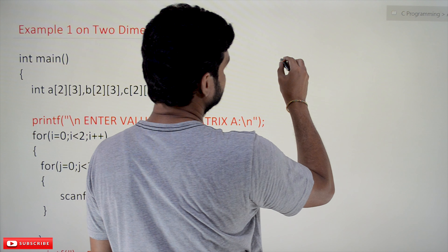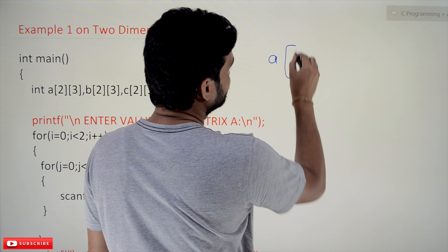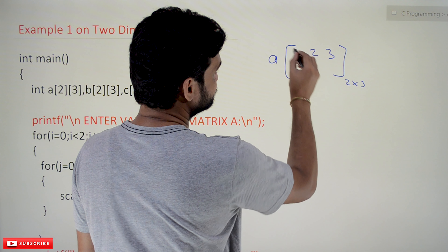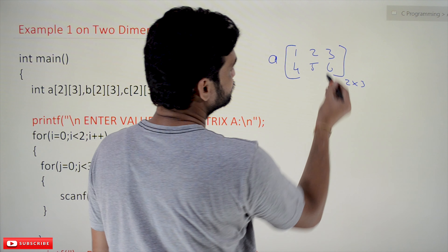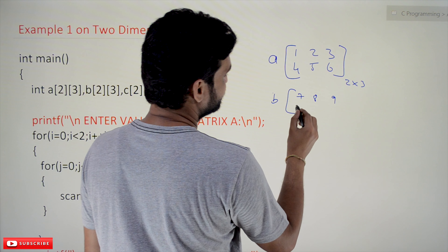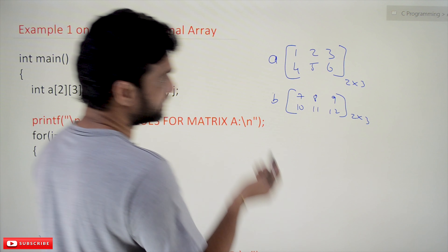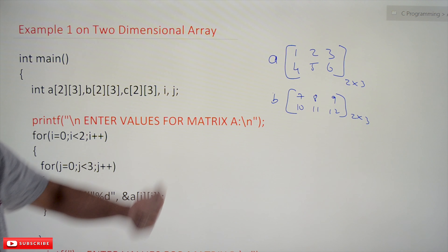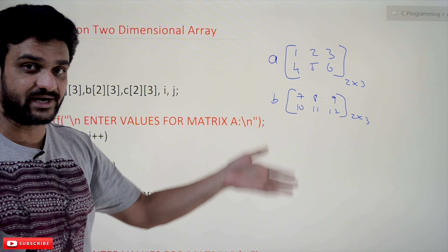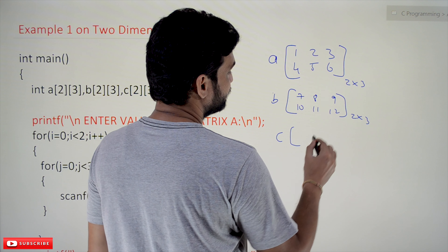Let's recap matrix addition. Matrix A is a 2x3 matrix with two rows and three columns. Matrix B is also a 2x3 matrix. The addition of these two matrices — the sum of A and B — is going to result in another 2x3 matrix, which we are going to call C.